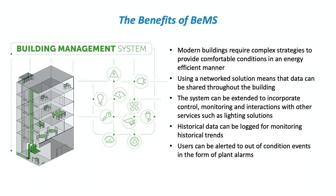With a network solution we can share data throughout the building. Using fast communications, a BEMS can look at the position of every single valve in a building and establish what the demand is for the boilers or chillers, creating quite complicated control strategies. The system can also be extended to incorporate monitoring interactions with other services — for example, a lighting occupancy sensor that detects someone entering a room can feed that information into the BEMS to affect heating or cooling as well.